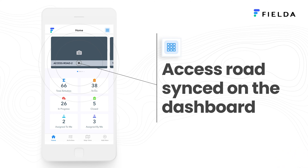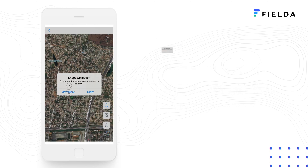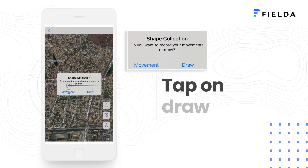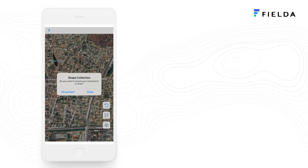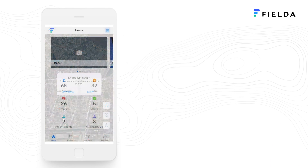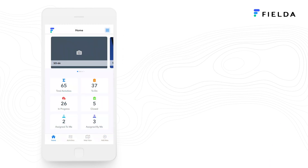If you prefer to record your movement instead of having to draw, simply tap on 'Movement' instead of 'Draw' when you start the access road activity from your dashboard.